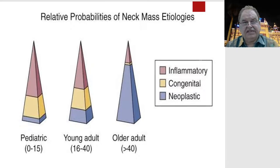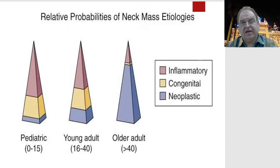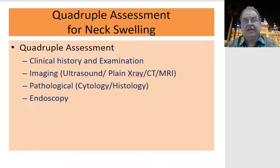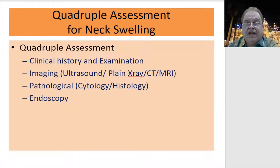Depending upon the probability of neck masses based on age: in a child it is more likely inflammatory or congenital; in young adults it can be inflammatory or a neoplastic variety; but in older patients it is much more likely to be a neoplastic swelling.